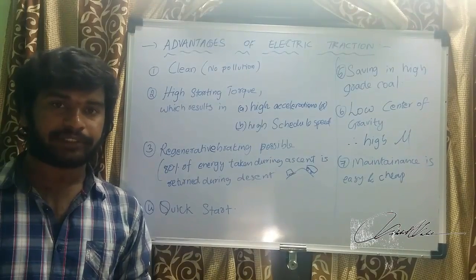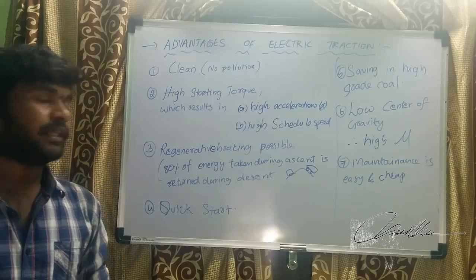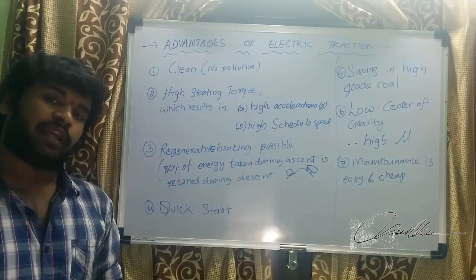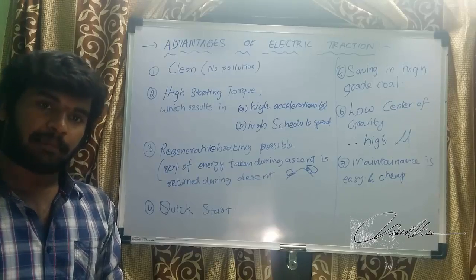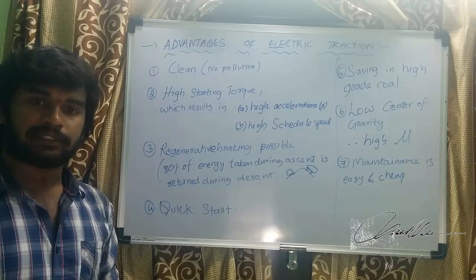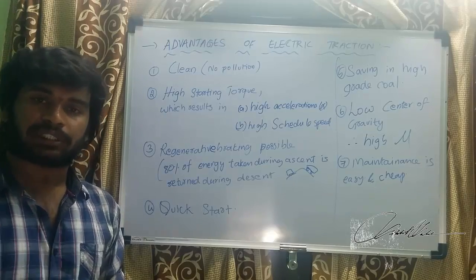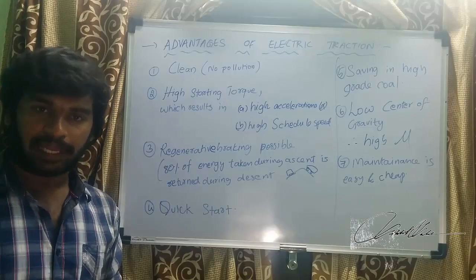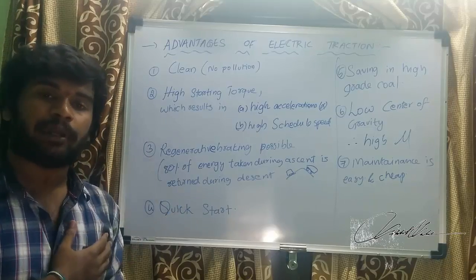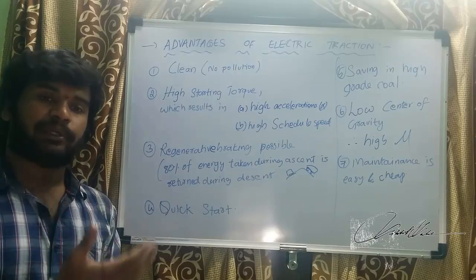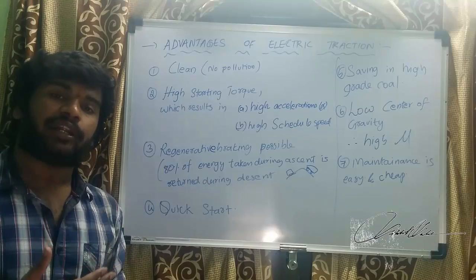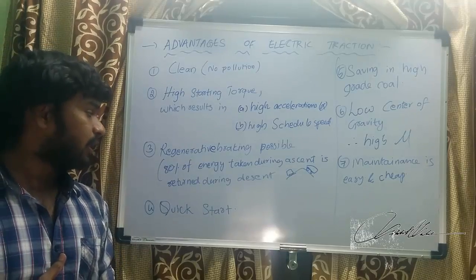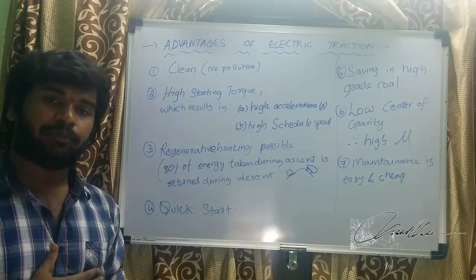The advantages of electric traction: first, it is clean — no pollution. Second, high starting torque — it can pick up heavy loads at starting and results in higher acceleration. Acceleration is often rated as 0 to 100 kmph in seconds, denoted by alpha. This results in high schedule speed, allowing the train to reach stations on time.